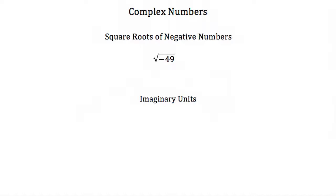Imaginary numbers come from when we try to take the square root of a negative number. Up until now we've always said we can't take the square root of a negative number because there's no number that you can multiply by itself that would end up negative. If you multiply 2 times 2 you get 4, and negative 2 times negative 2 is a positive 4. So there's no way you can multiply any number by itself and get a negative — it'll always end up positive.